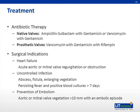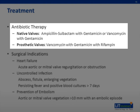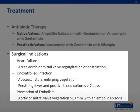The treatment of infective endocarditis utilizes antibiotics and sometimes surgical removal. Antibiotic therapy is tailored to the organism if culture is available or the type of valve infected. For native valve infection, ampicillin-sulbactam with gentamicin, or vancomycin with gentamicin is used. For prosthetic valves, vancomycin with gentamicin and rifampin is used. Surgical indications include heart failure, acute aortic or mitral valve regurgitation or obstruction, uncontrolled infection, any abscess, fistula, or enlarging vegetation, persisting fever and positive blood cultures greater than seven days, prevention of embolism, and aortic or mitral valve vegetation greater than 10 millimeters with an embolic episode.